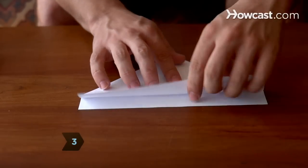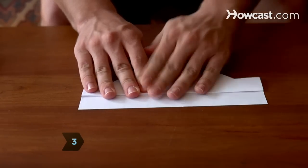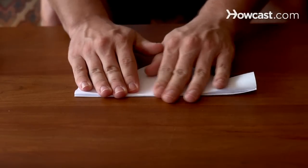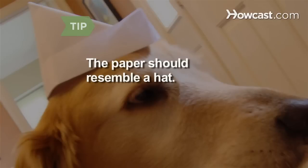Step 3. Fold the loose rectangular edge on the top side of the paper up over the flaps, and fold down the overlapping triangles at the ends. Then turn the boat over and repeat on the other side. The paper should now resemble a hat.